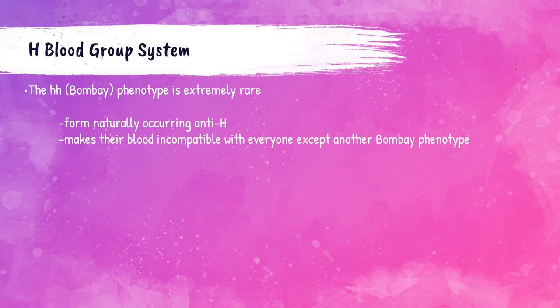In people with the Bombay-O blood type, no H antigen can be produced because no H gene is inherited, which prevents the formation of A or B antigens on the red blood cell. So the patient will type as an O patient. The serum in patients with Bombay-O phenotype contains a naturally occurring anti-H antibody. Since an overwhelming majority of people have the H antigen, Bombay-O patients receiving a transfusion will have their anti-H antibodies agglutinate those H antigen red cells, causing a transfusion reaction. Bombay-O patients can only receive other Bombay-O blood.